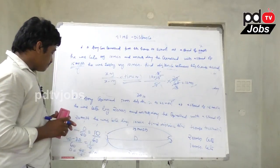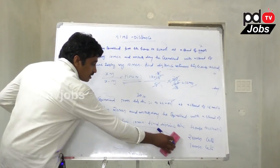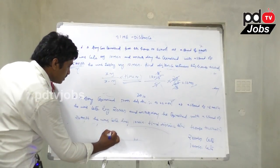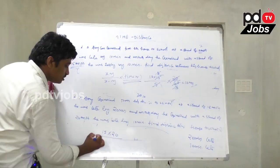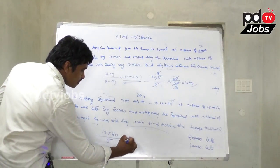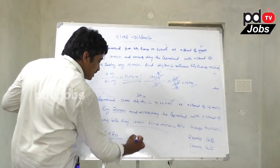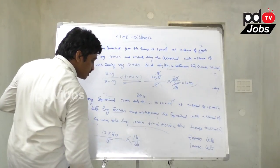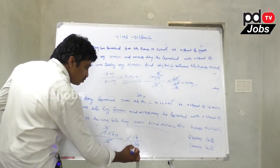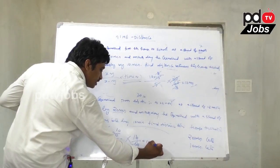Similarly for the second question using the formula: X = 15 kmph, Y = 20 kmph. Distance = 15 × 20 divided by (20 minus 15) = 300/5 = 60, multiplied by time difference of 10 minutes (10/60 hours). That gives distance = 10 km.